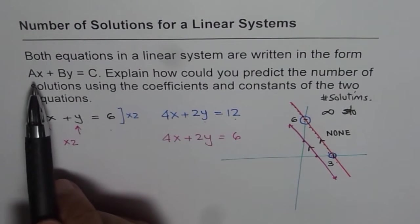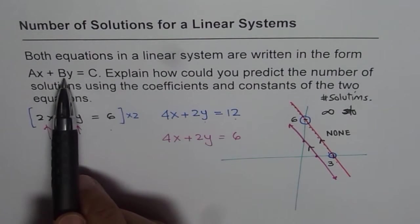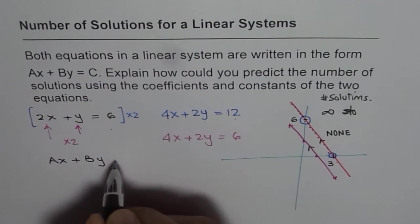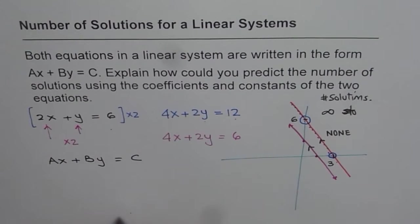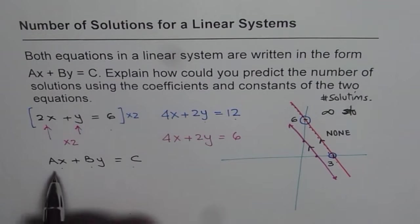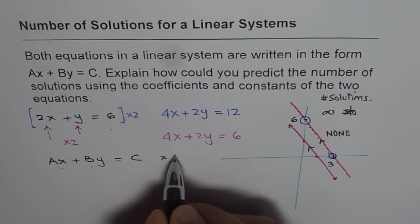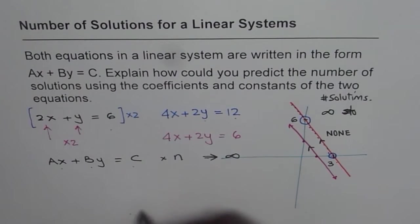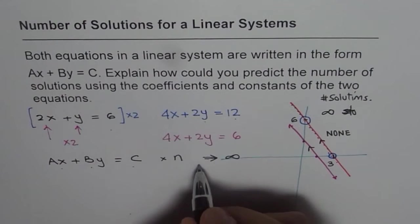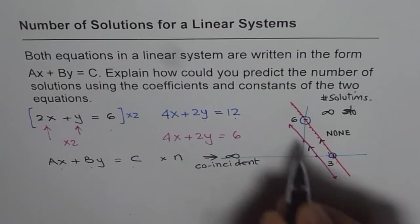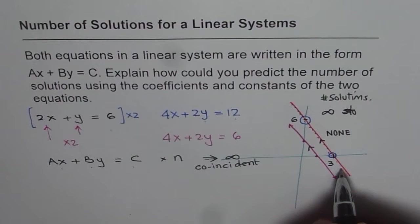That if we are given line in the form of AX plus BY plus C, let me write down. AX plus BY equals to C. Then, if I times every number, means both coefficients and the constant, by a number, let's say if I times it by N, then we have infinite solutions, because they are coincident lines. On the graph, they are exactly same lines. Do you see that?